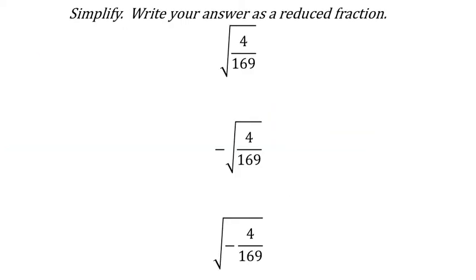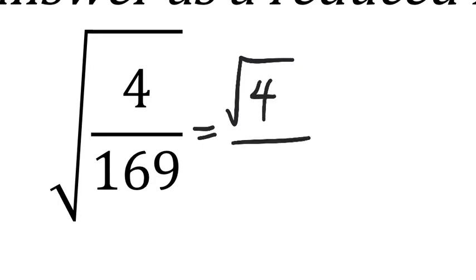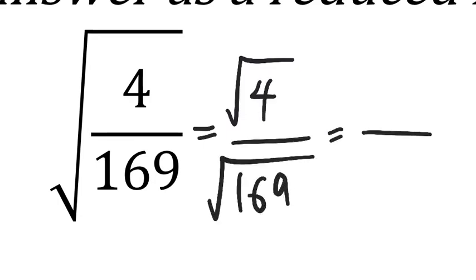Let's write these as reduced fractions. Starting with the square root of 4 over 169. Both 4 and 169 are perfect squares. If doing this by hand, you square root the numerator and denominator separately. The square root of 4 is 2. The square root of 169 is 13 — you can put that in the calculator. Then check if the fraction can be simplified, but it can't — 13 is prime and not divisible by 2.